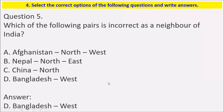Which of the following pairs is incorrect as a neighbor of India? The options are: Afghanistan to the northwest, Nepal to the northeast, China — and Bangladesh to the west. The wrong option is Bangladesh west, because Bangladesh is on the east side of India.